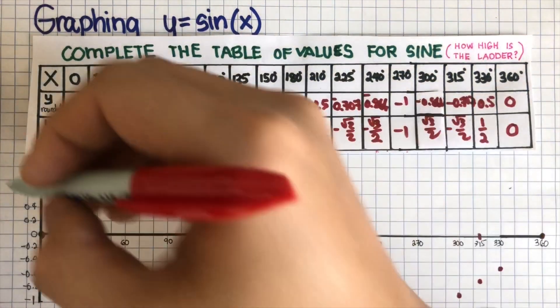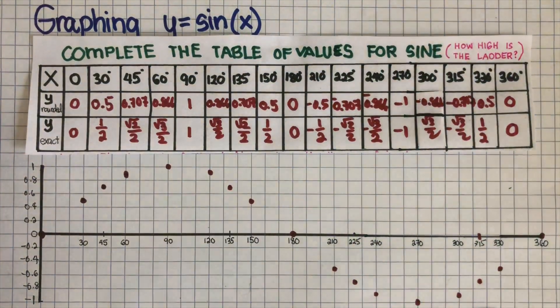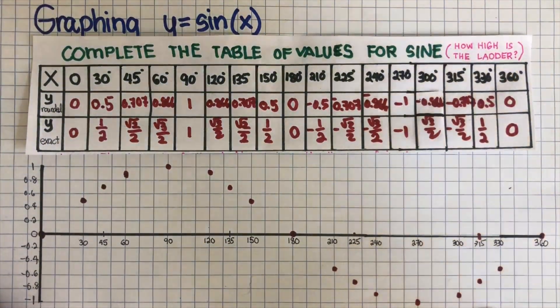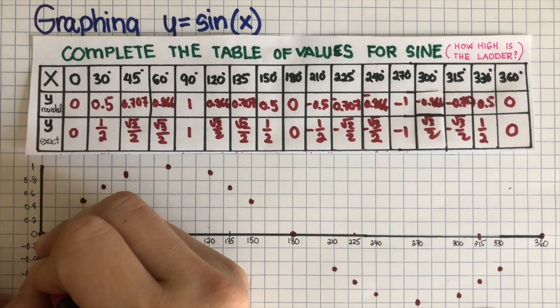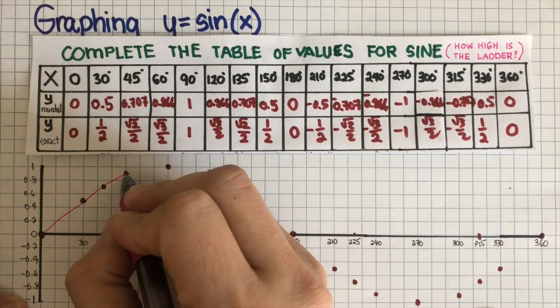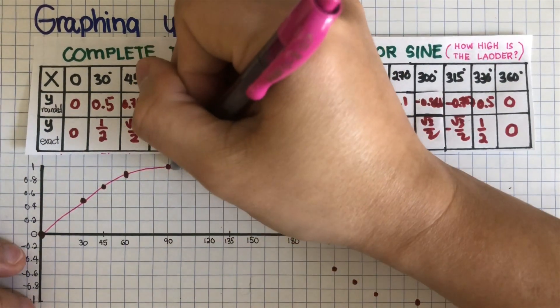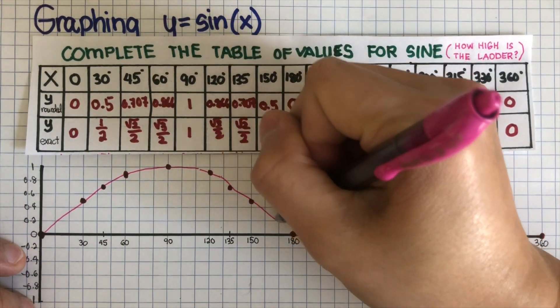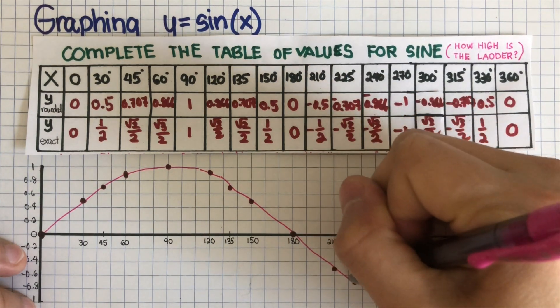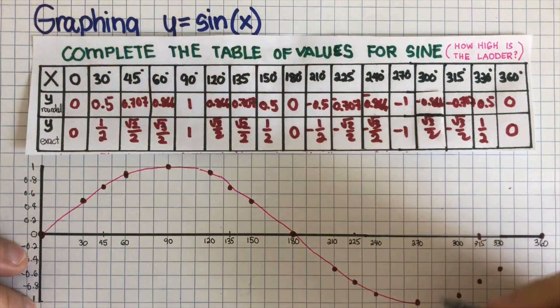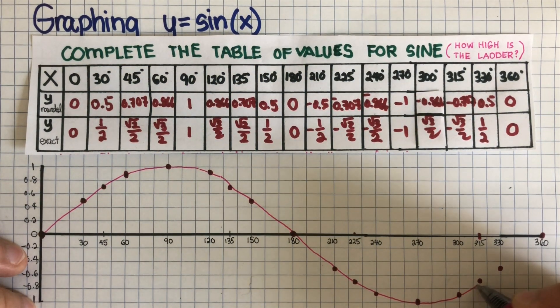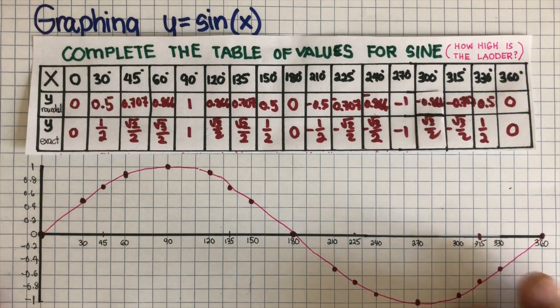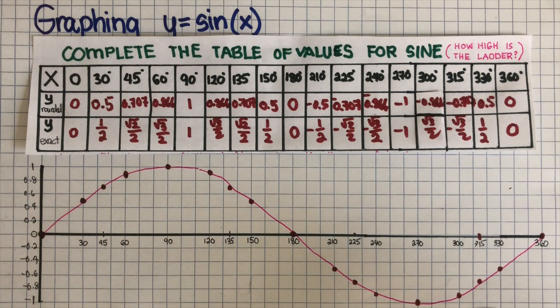So this is the shape of the parent graph of y equals sin x. So it goes there, and then it goes here. Okay, so there you go. And this is the shape of the parent graph of y equals sin x.